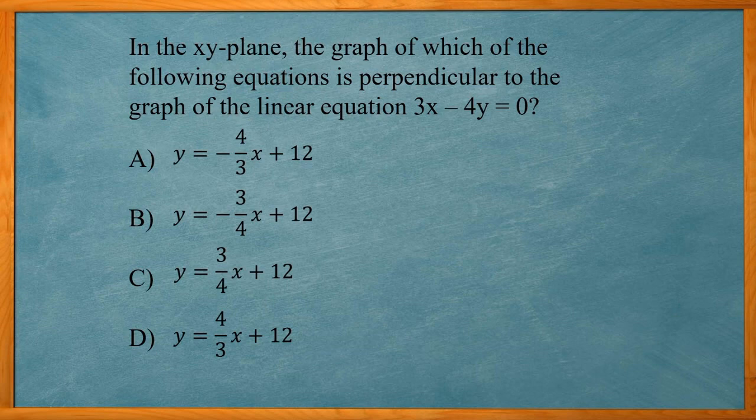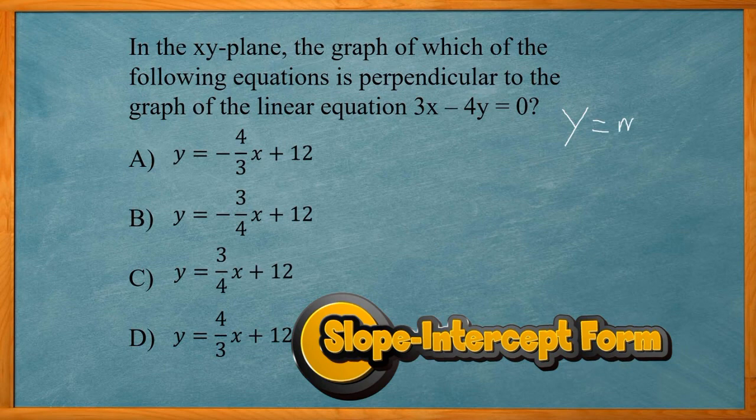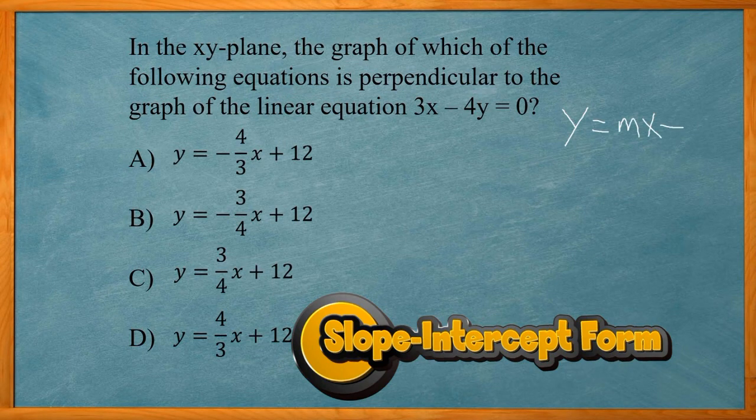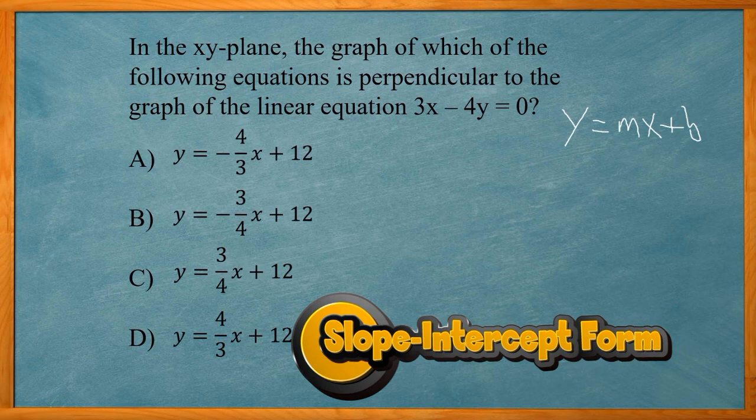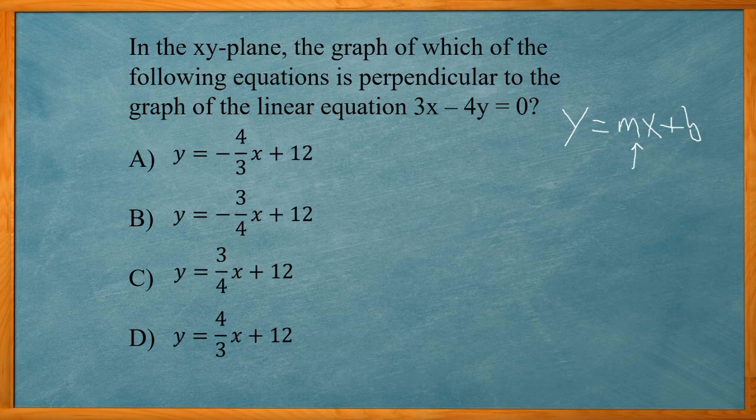To find the slope there, you want to put it in slope intercept form. Slope intercept form looks like this, y equals mx plus b, where m is your slope. If you get the y by itself, the number in front of the x will be your slope.